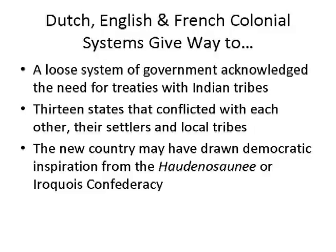Once the Revolution ended, they no longer had a choice but to accept the new American government. What had been a land of Dutch, English, and French colonies now became a loosely held together union of 13 states. These colonies often conflicted with each other over Indian law, and sometimes settlers within a particular colony took the law into their own hands. It became evident that the United States needed some kind of cohesive, centralized government.